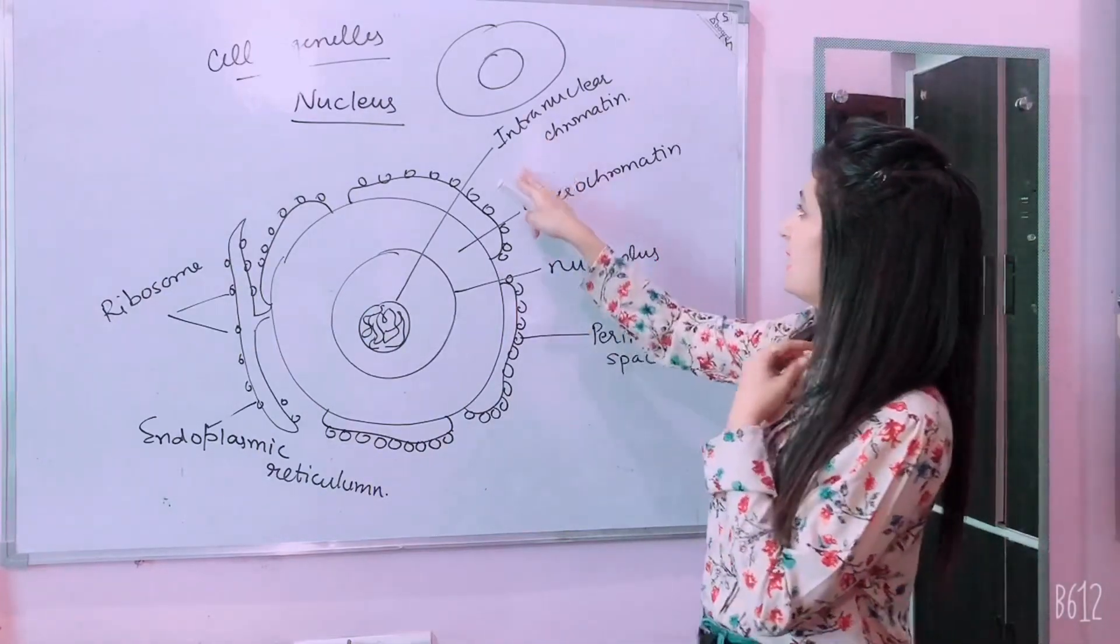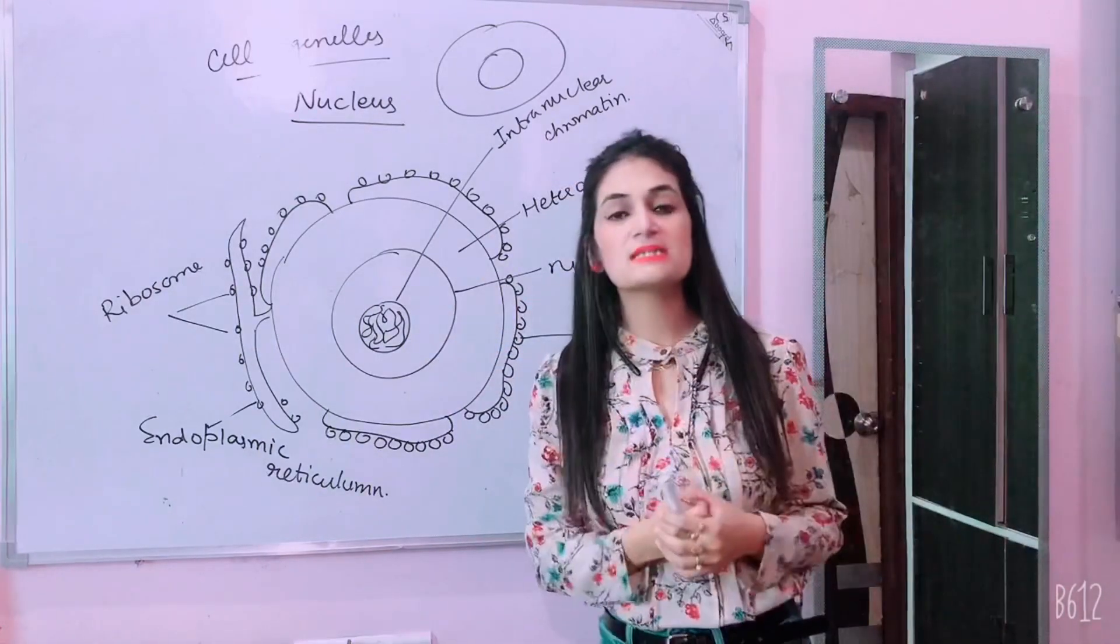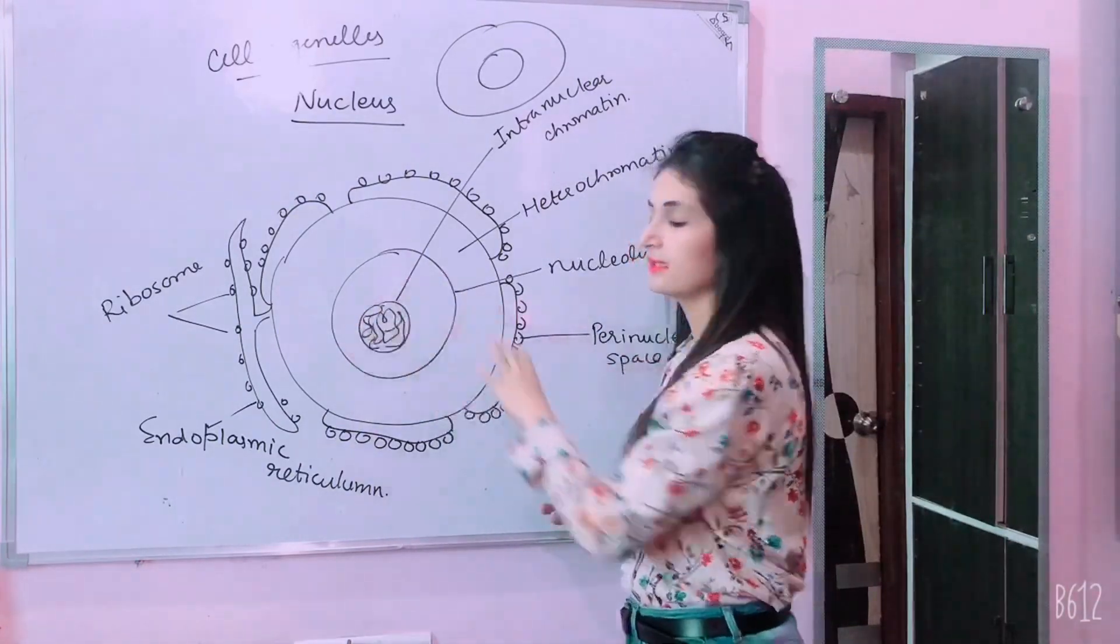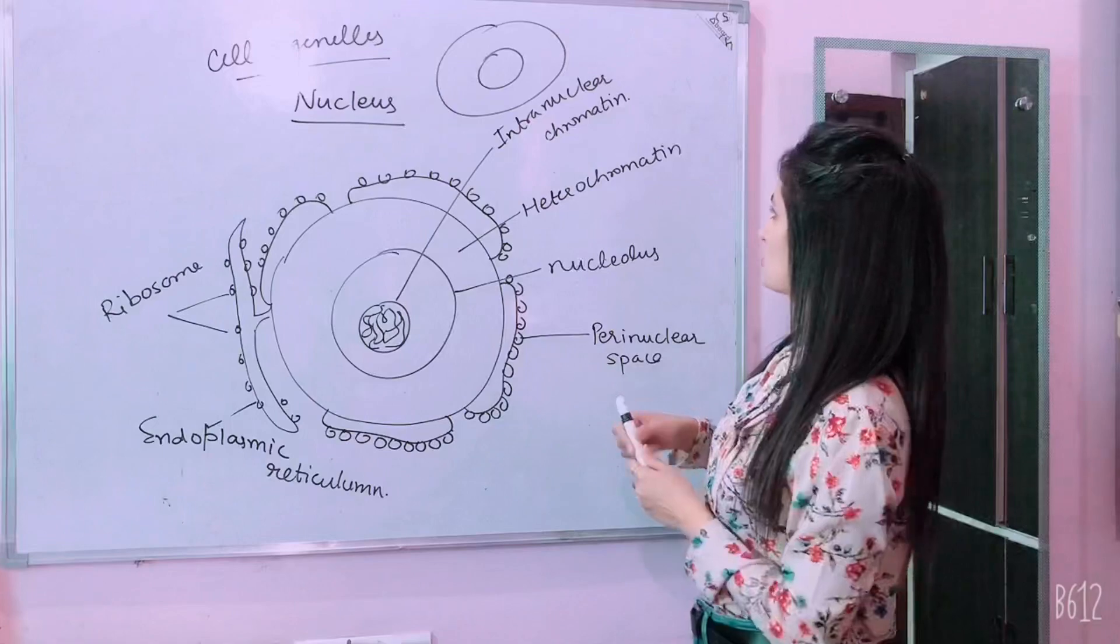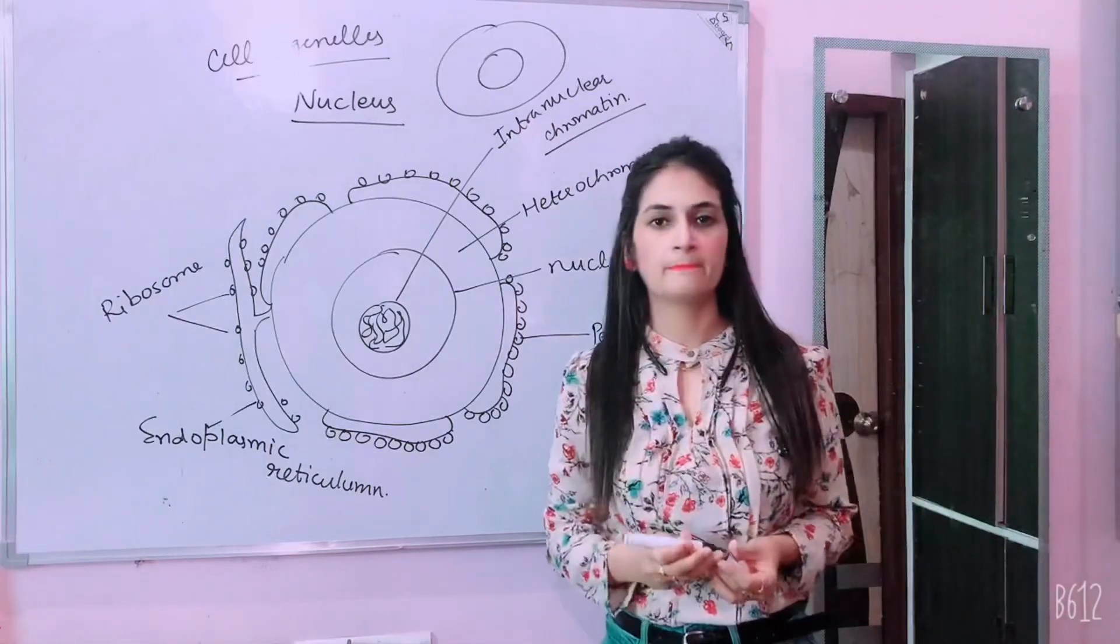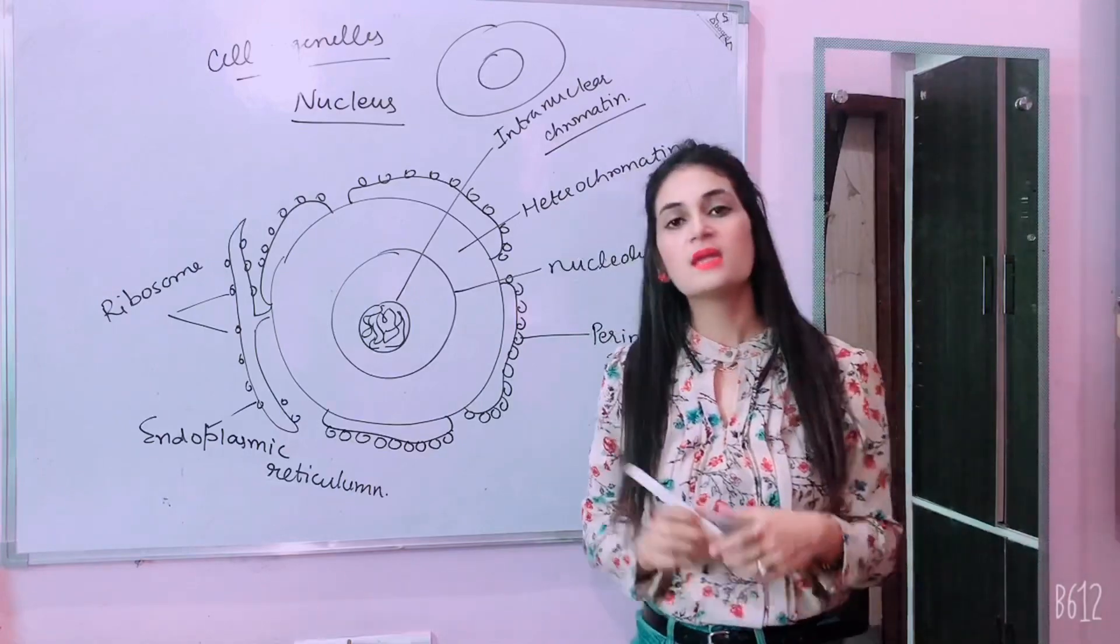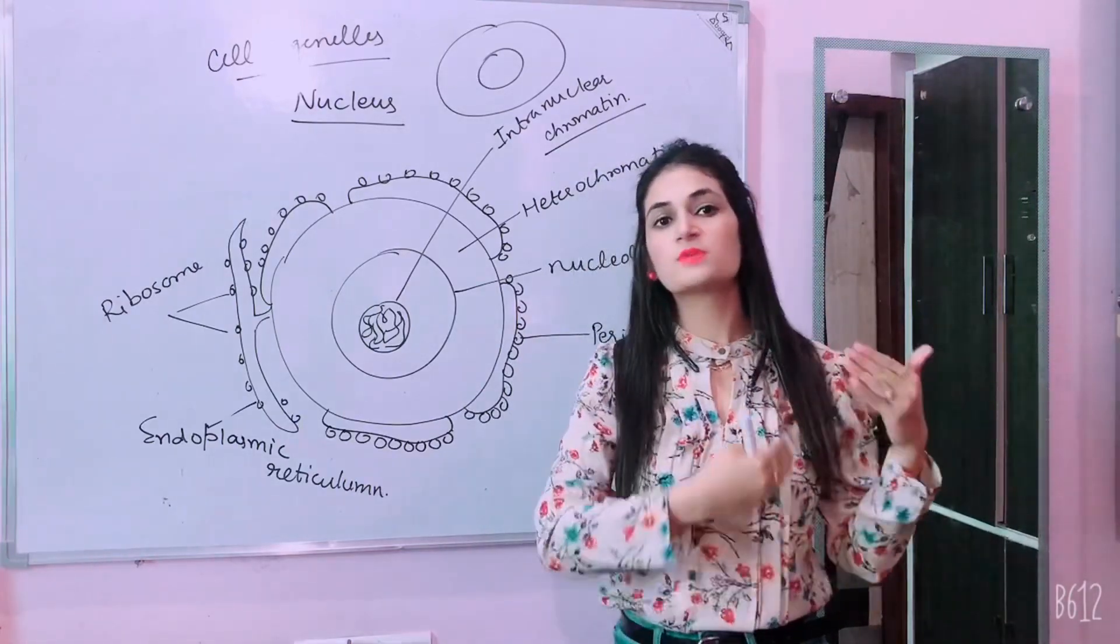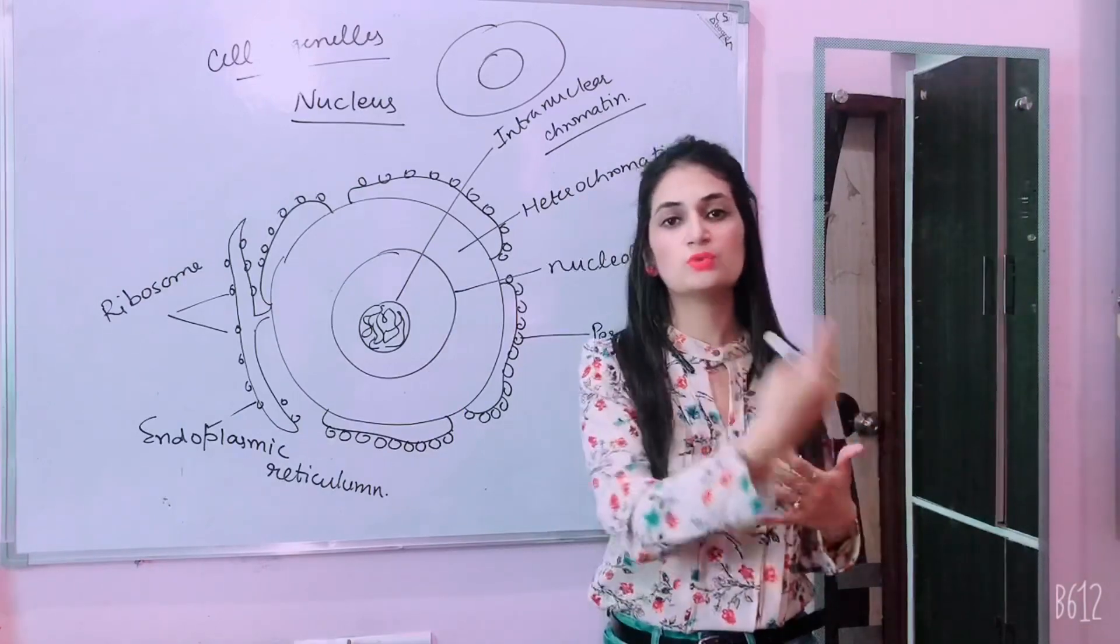First, intranuclear chromatin. What is intranuclear chromatin? What is chromatin? It is a genetic material. What is the genetic material? What is the material that the parents have produced from their offspring? Offspring means that they are newly produced.